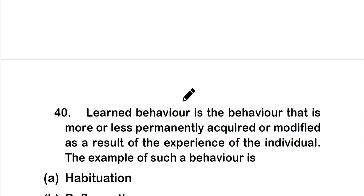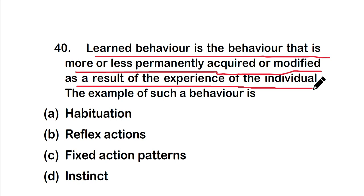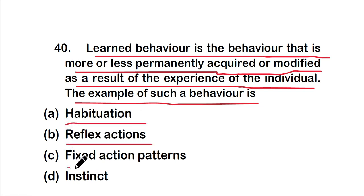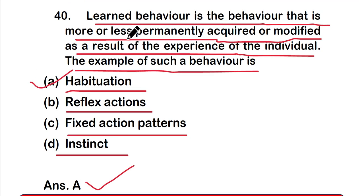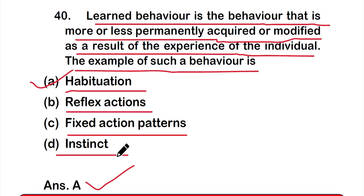Question number 40: Learned behavior is the behavior that is more or less permanently acquired or modified as a result of the experience of the individual. An example of such behavior is — option A: habituation, option B: reflex action, option C: fixed action pattern, or option D: instinct. The correct answer is option A — habituation. Habituation is a psychological learning process that involves becoming less responsive to a stimulus after repetitive exposure. These are all 20 questions of Part 2 on the topic of evolution. Thank you for watching.